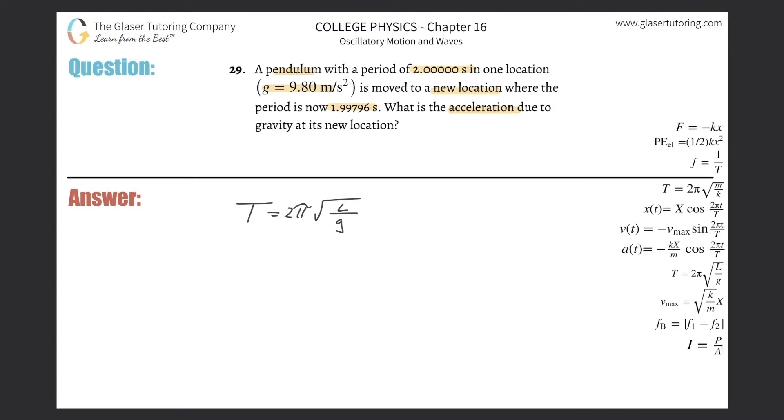Now they tell us the period is two seconds and they tell us the g value that's associated with that period. So what I can do, knowing those two pieces of information, is I can solve for the length of the pendulum.